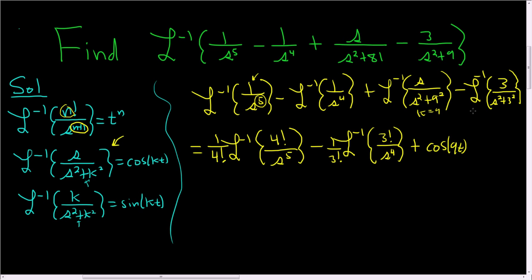And in this case, k is 3. And we have a number up top, and there's our k. So it's going to be sine. So sine of 3t.